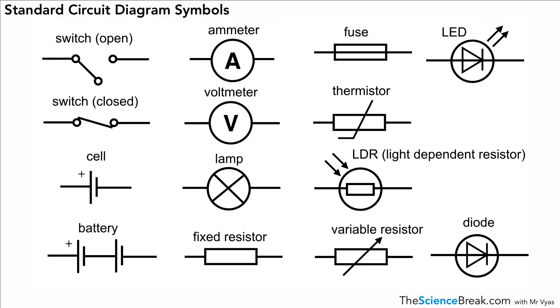The final one at the bottom is a diode, and that only allows current to flow in one direction in a circuit.